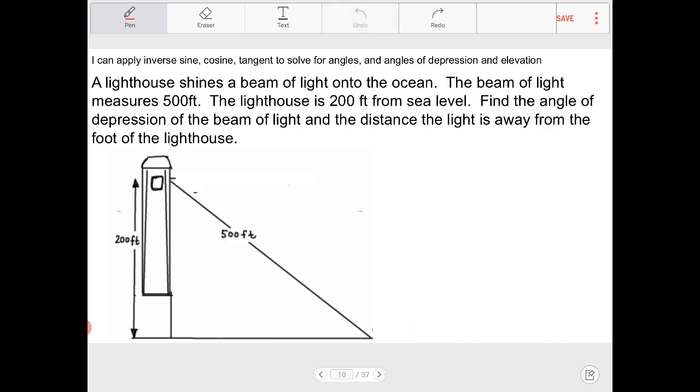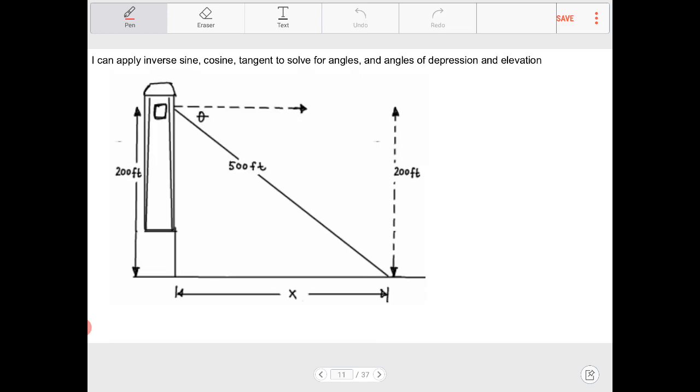Let's label the diagram. So here I have 200 feet. That's this entire length. And I have 500 feet, which is that of the hypotenuse. So what I want to do to figure out the angle of depression, immediately I know that this is going to be my angle of depression. And I have a right triangle in place.